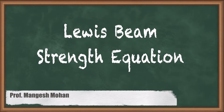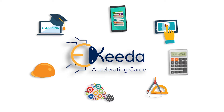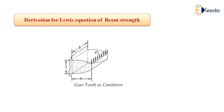Hello students. Let us talk about the derivation for Lewis equation of beam strength. For deriving Lewis equation, we consider the gear tooth as a cantilever beam. The figure shows B is the width of the gear tooth, H is the height of the gear tooth, and PT is the tangential load acting on the gear tooth.